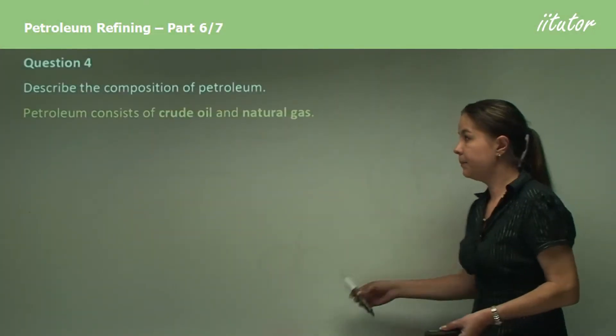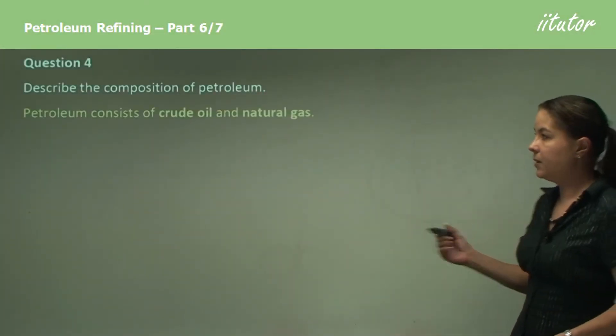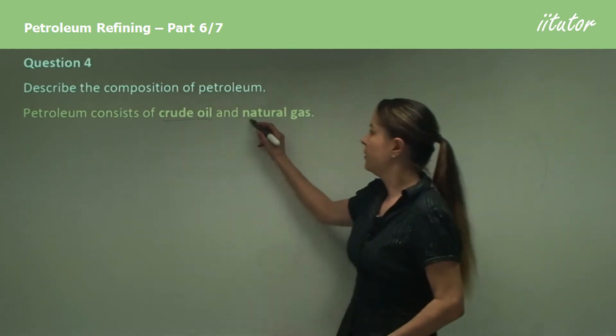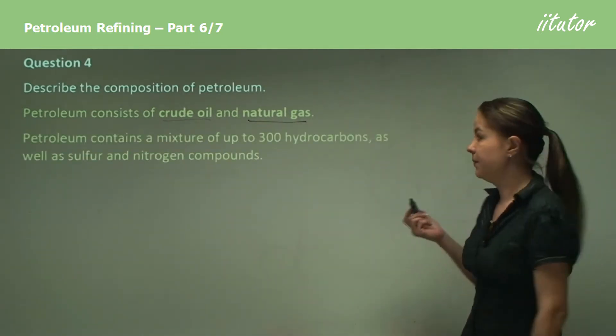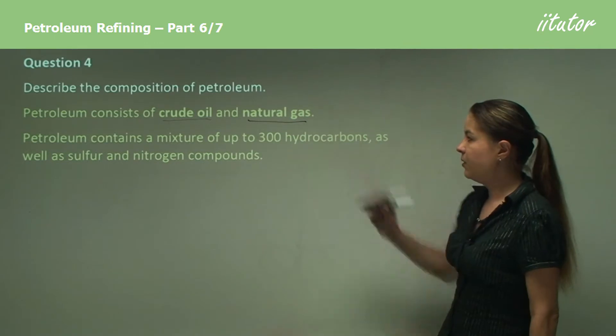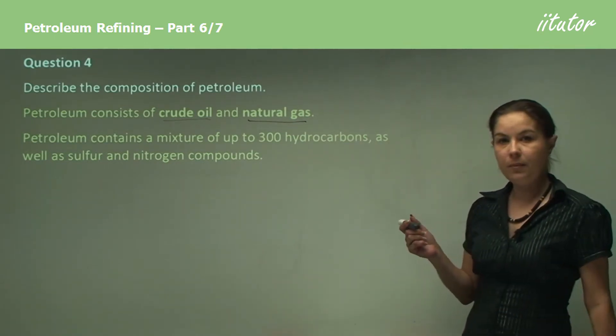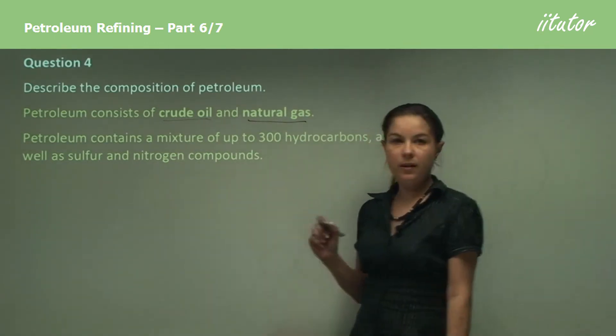Describe the composition of petroleum. Petroleum consists of crude oil and natural gas. It is a mixture of up to 300 different hydrocarbons, as well as sulfur and nitrogen compounds.